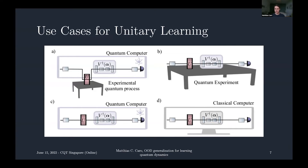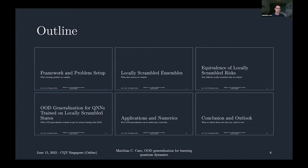Here's an overview of the rest of the talk: first a more mathematical setup of the problem, including what training and testing ensembles we look at; then the main theoretical results on how locally scrambled risks relate to each other and some out-of-distribution generalization results; and then applications and numerical experiments before concluding with open questions.